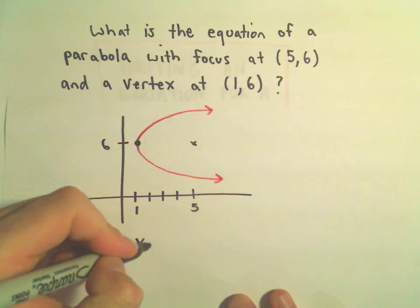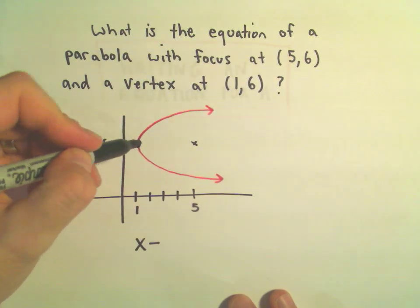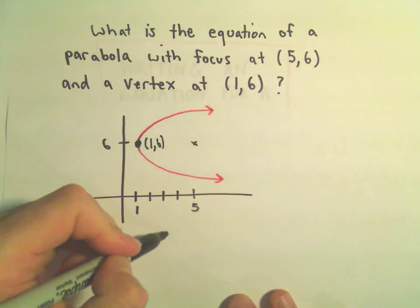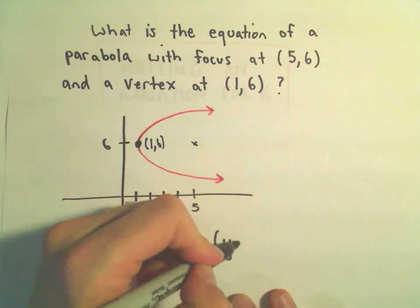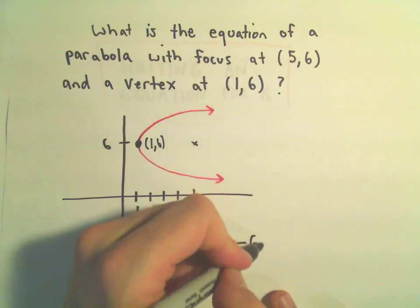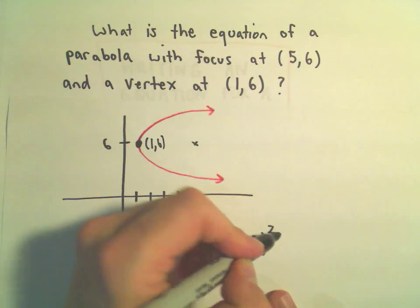I'm going to take x minus the x-coordinate of the vertex, which in this case will be 1, equals 4p times y minus the y-coordinate of the vertex, which is going to be 6 squared.